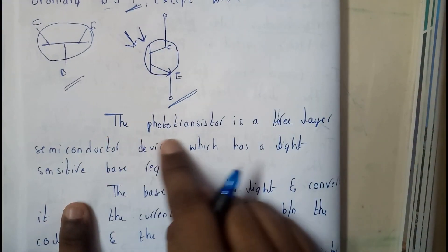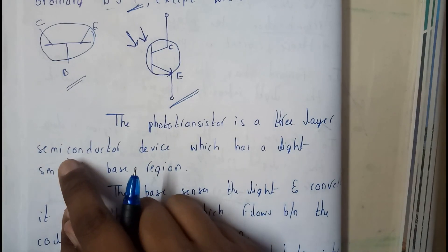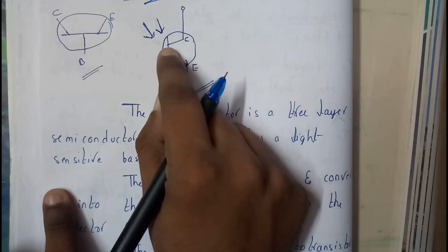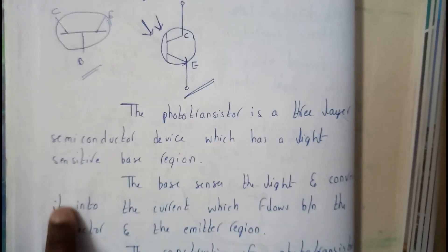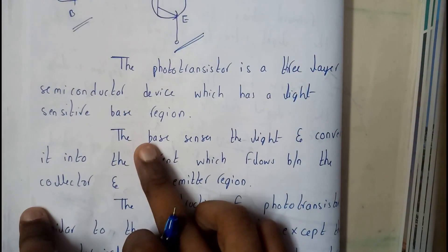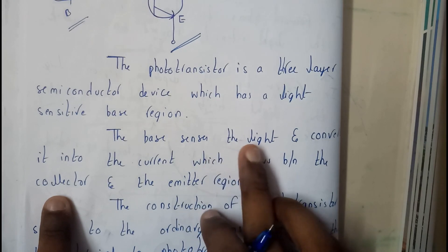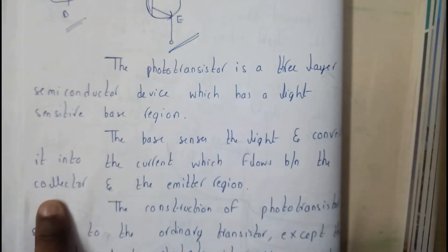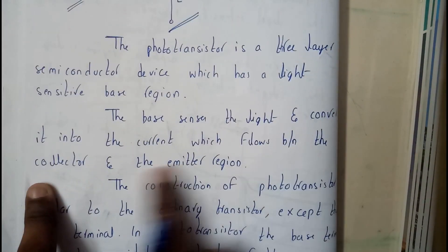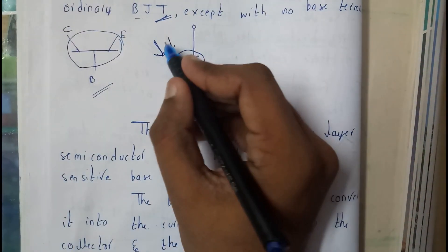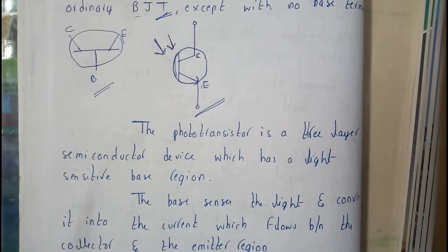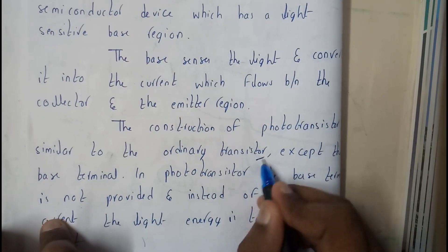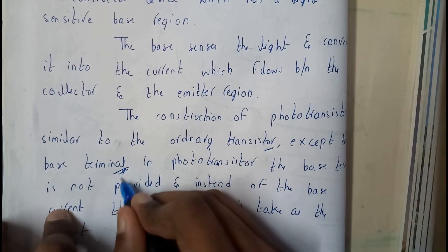A photo transistor is a three-layer semiconducting device which has a light-sensitive base region. The base senses the light and converts it into current which flows between the collector and the emitter. So if light falls on the base, current flows between collector and emitter. The construction of a photo transistor is similar to an ordinary transistor except for the base terminal.